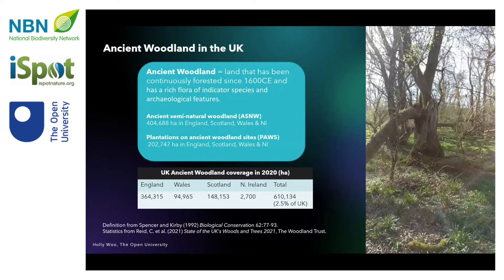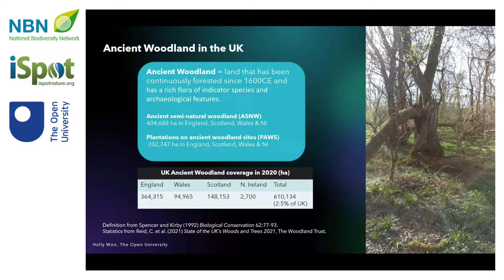Ancient woodland has been defined as land that's been continuously covered with forests since 1600. It has a rich flora including ancient woodland indicator species. Today this type of woodland covers around 2.5 percent of the land area of the UK.